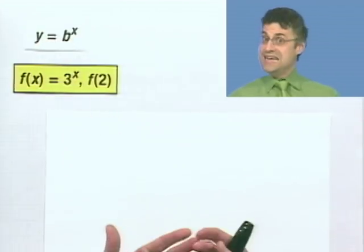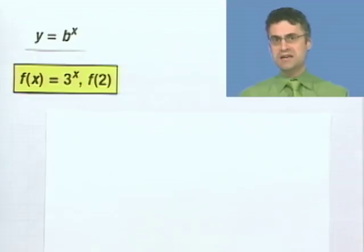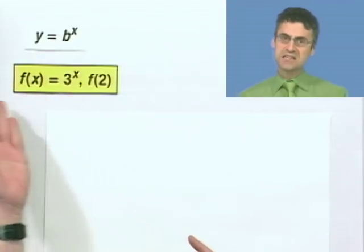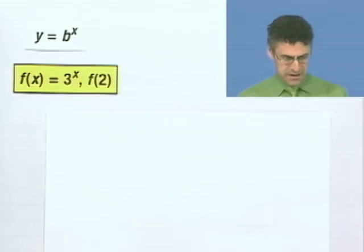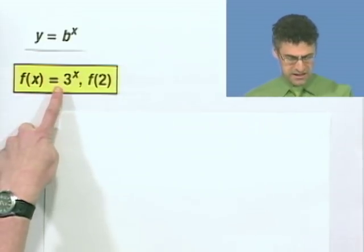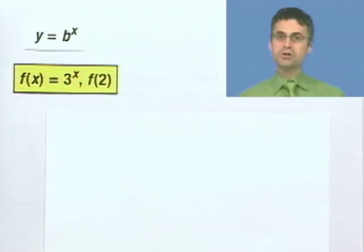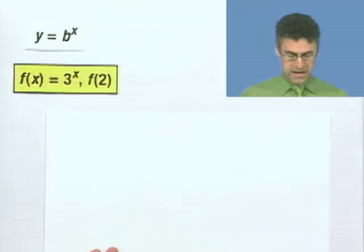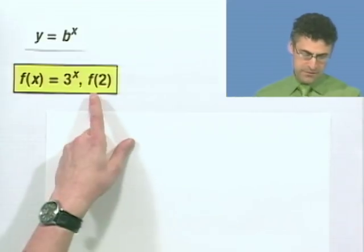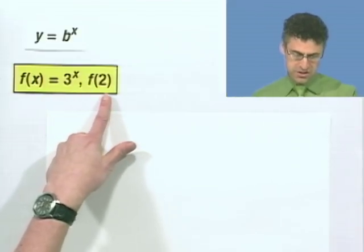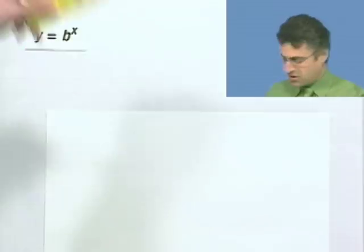And I want to look at f of 2. Now, what does f of 2 mean? Well, you have to remember what this means. It means that wherever I see an x in this story, I'm going to replace it by 2. So what that means is that f of 2 is going to equal 3 raised to the 2 power, or 3 squared. And when it's 3 squared, 3 squared is 3 times 3, which is 9. So if I evaluate this exponential function at 2, I see 9. Great. No problem.